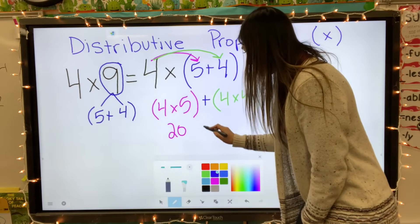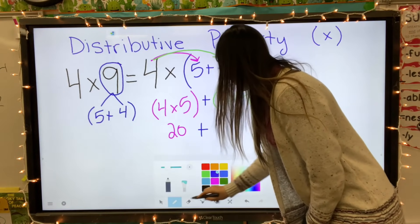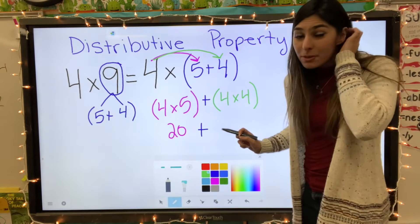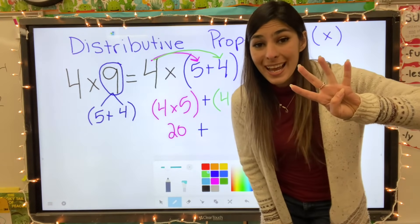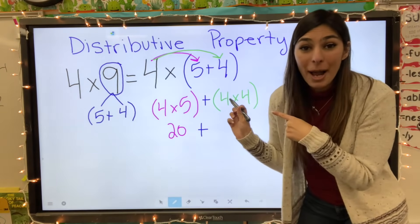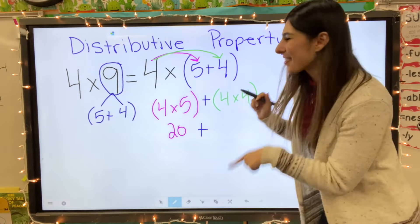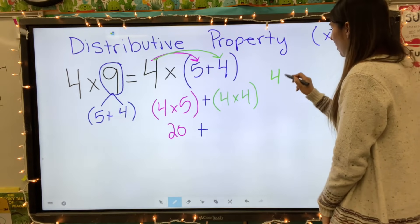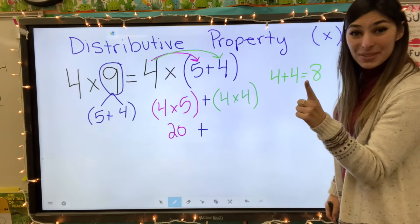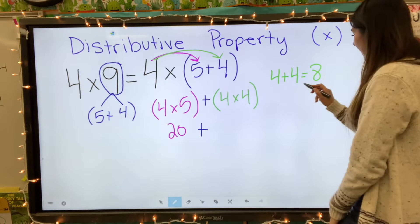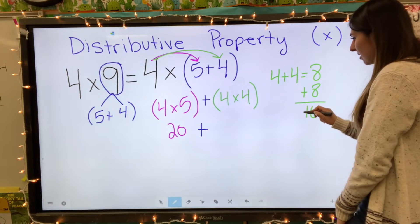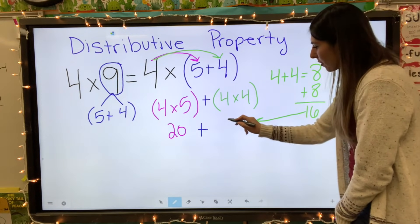Five, ten, fifteen, twenty — so four times five equals twenty. Don't forget that plus sign. Now let's solve our next equation: four times four. When I think of fours, I think 'double double, have no trouble,' so I'm going to double-double one of those fours.